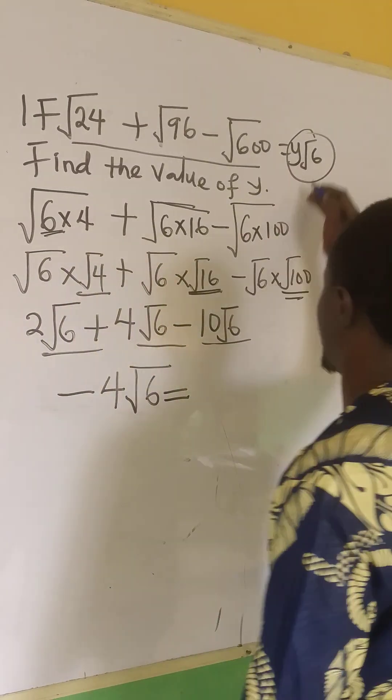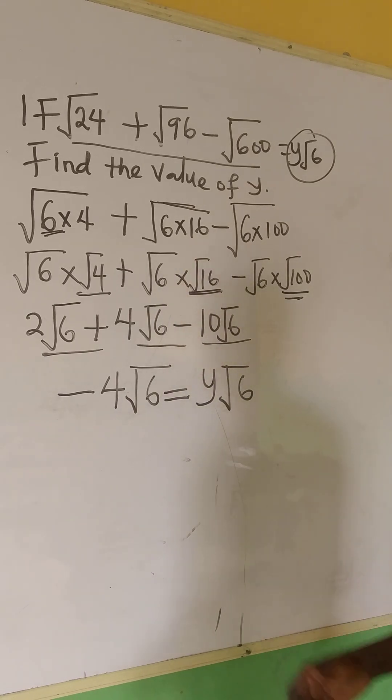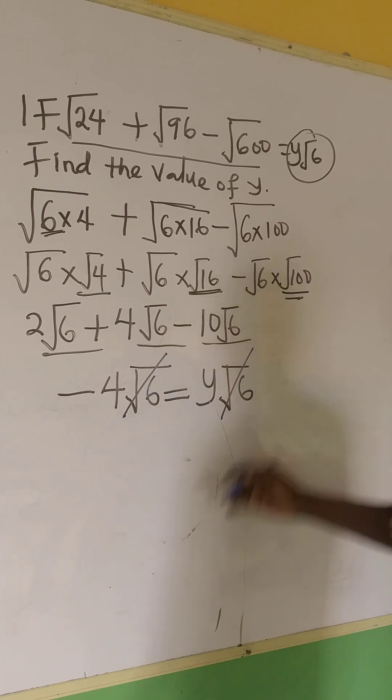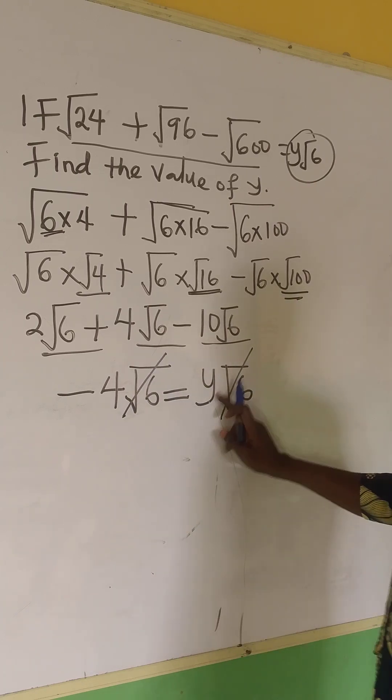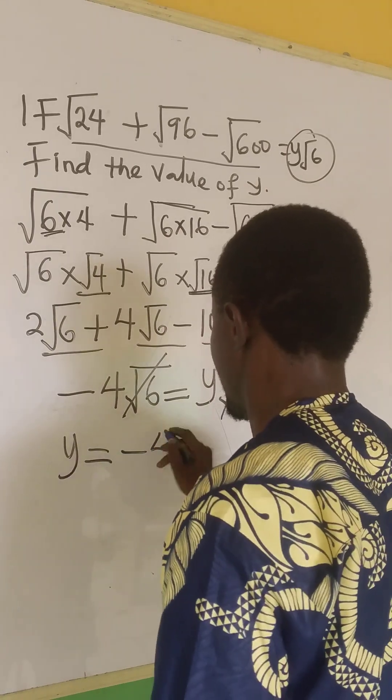Equal to, we can bring it down, y√6. The question is asking us to find y. That means √6 can cancel √6. What do we have left? We have y and we have -4. That means y equals -4.